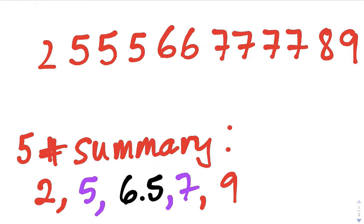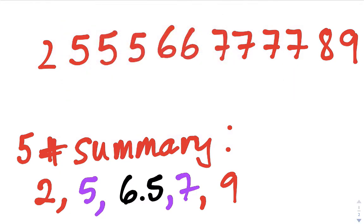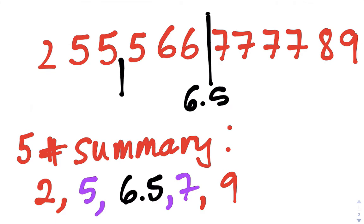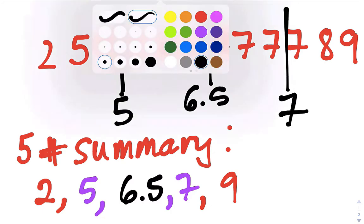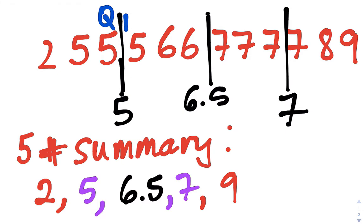So here's our five-number summary. The min is 2, Q1 is 5, the median is 6.5, Q3 is 7, and the max is 9.